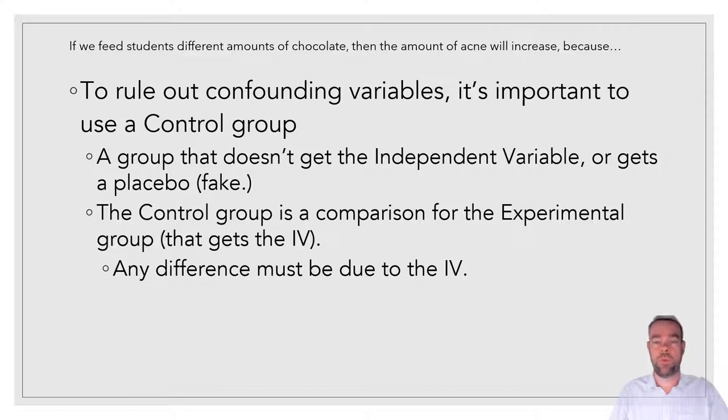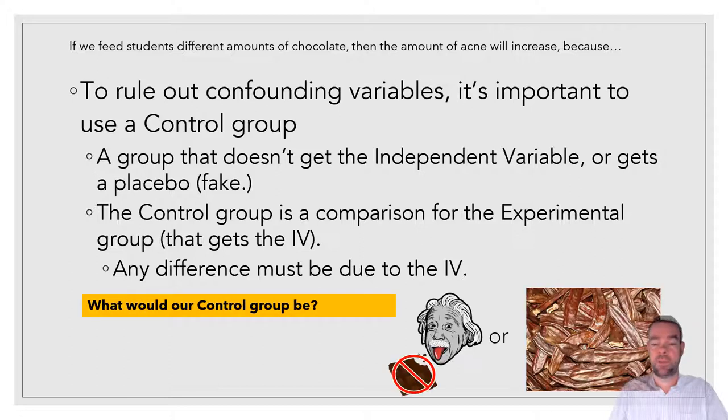So when they're testing vaccines right now, they're looking for 30,000 people to test on. So to rule out the confounding variables, you have to use a control group. That's going to be a group that does not get the independent variable or it gets a placebo, a fake version of the independent variable. So that allows us to then compare our experimental group or groups, the ones that get the independent variable, to the control group that doesn't. And any difference between them has to be due to the independent variable. So in our experiment, we can go ahead and give somebody no chocolate, but then they're going to know. And maybe their stress level will go down. So that's going to maybe confound our results. So really, it's better to give them a placebo. In this case, carob, which is what those pods are there. That's what they make fake chocolate out of. I've never personally tried it, but it doesn't look very good.